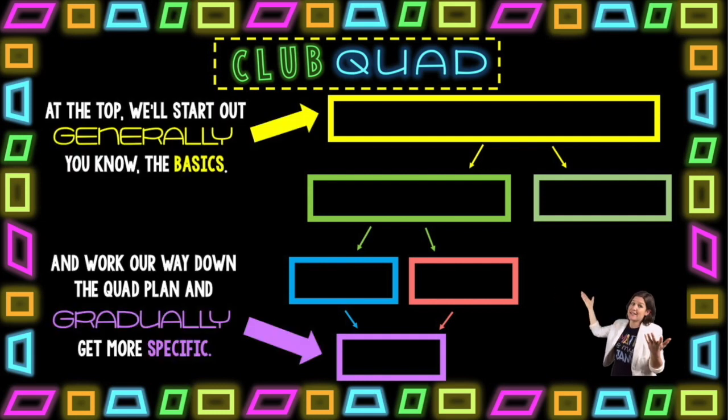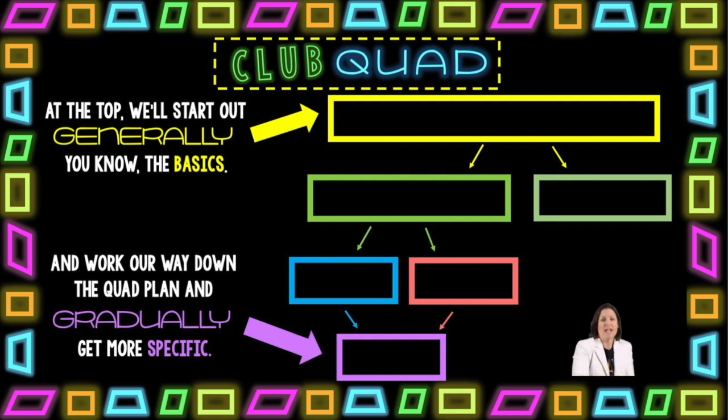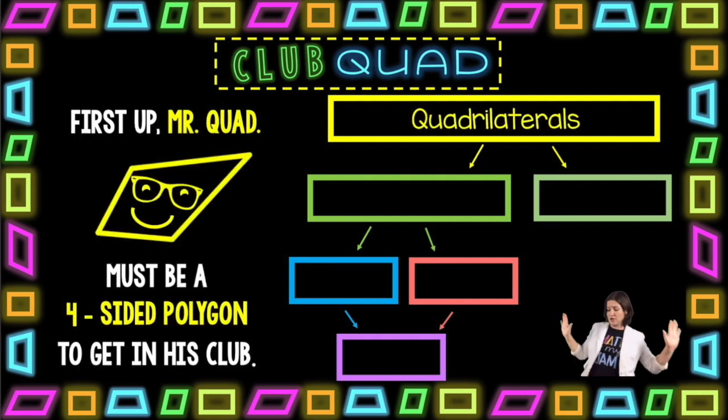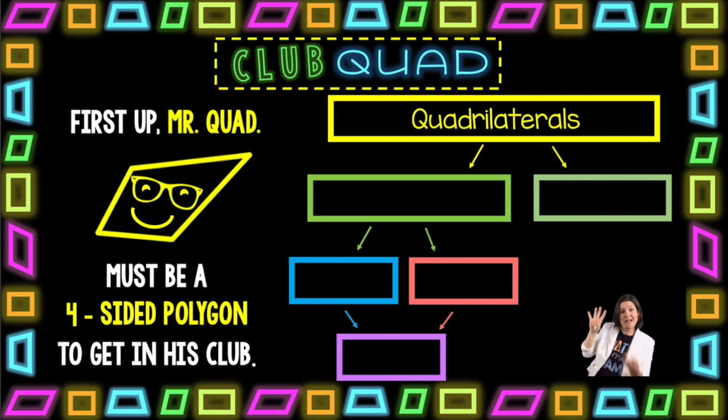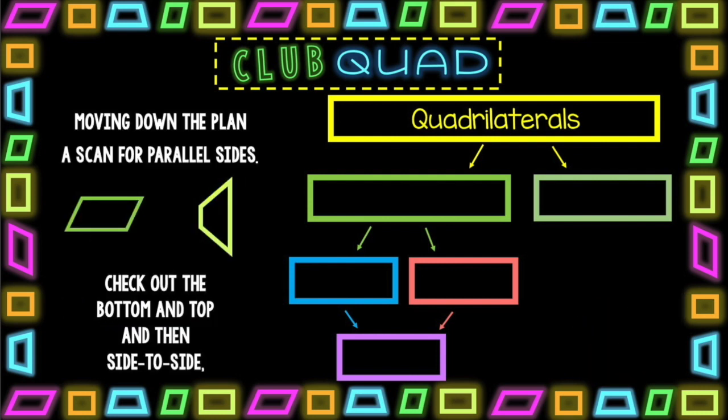You know, the basics. And work our way down the quad, planning gradually. Get more specific. First up, Mr. Quad must be a four-sided polygon and get in his club. Moving down the plan, scan for parallel sides.